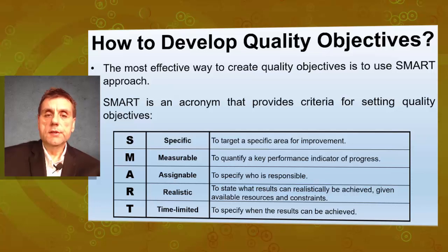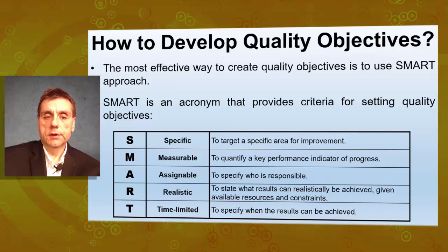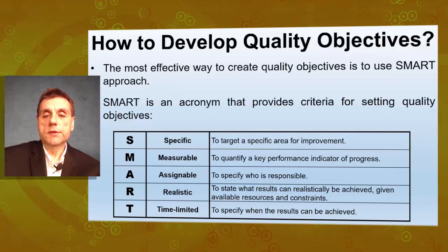Specific means to target a specific area for improvement. Measurable means to quantify a key performance indicator of progress. Assignable means to specify who is responsible for a particular quality objective. Realistic means to state what results can realistically be achieved given available resources and constraints. And time limited means to specify when results can be achieved.